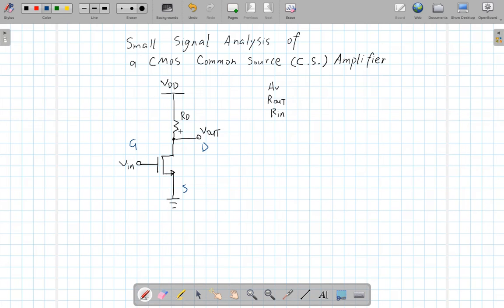There is a drain resistor connected between the output node and the VDD supply. The goal is to find the voltage gain of this amplifier. I use the notation A_V, where A stands for amplitude and V stands for voltage. R_out is the output resistance looking into the device from the V_out terminal, and R_in is the input resistance looking into the device from the V_in input.